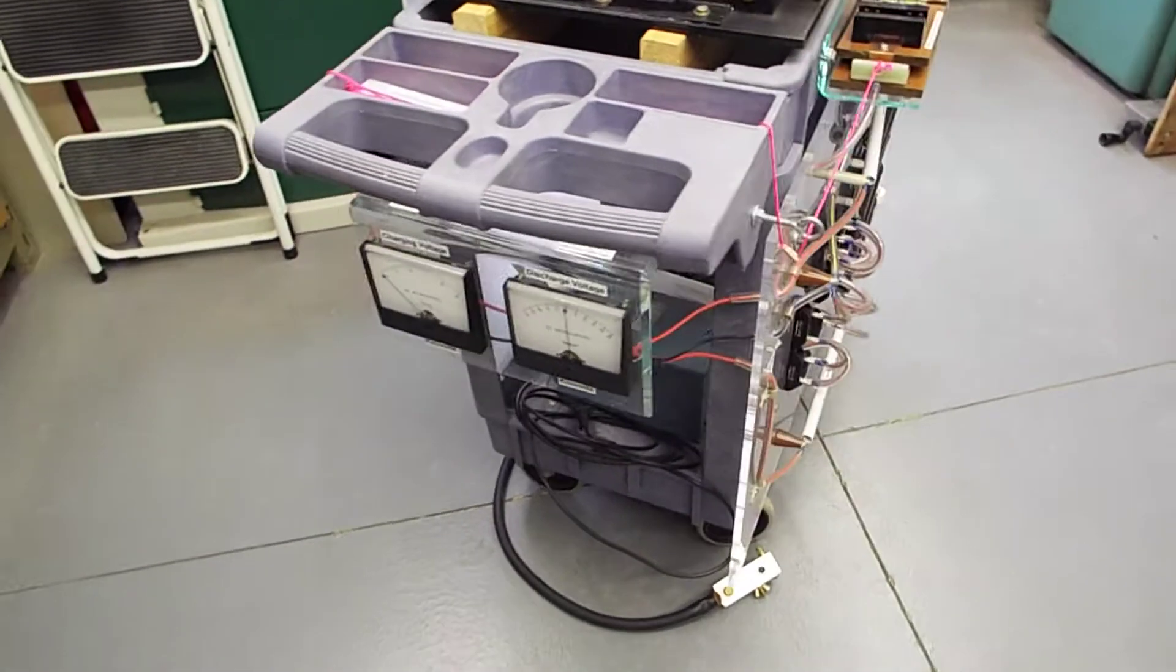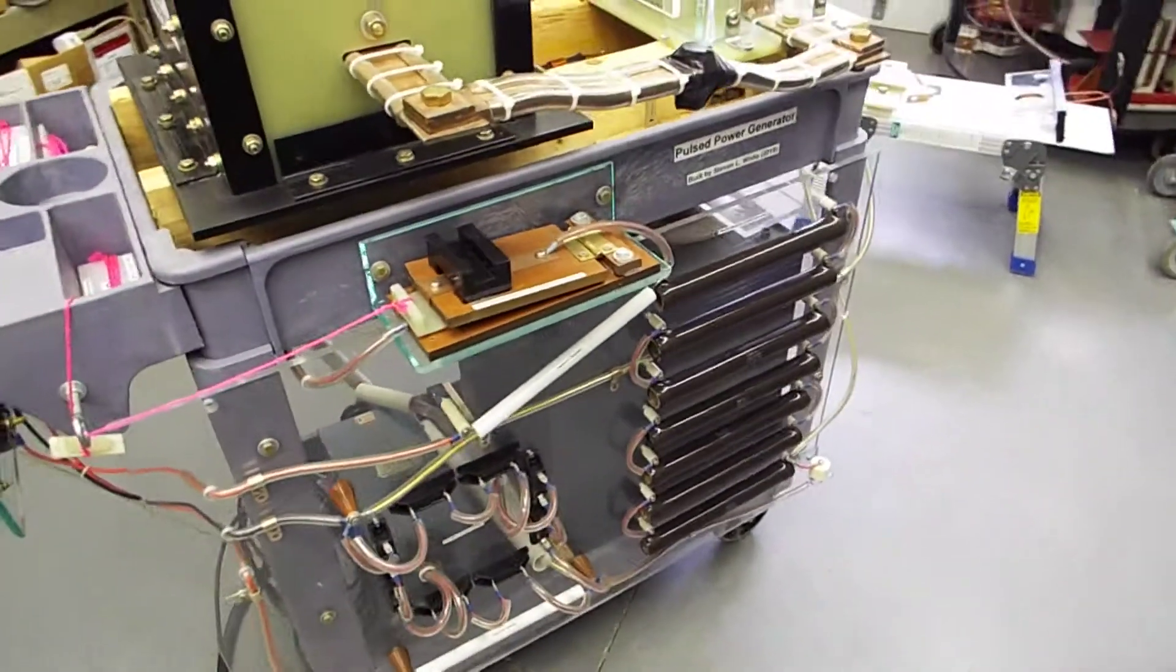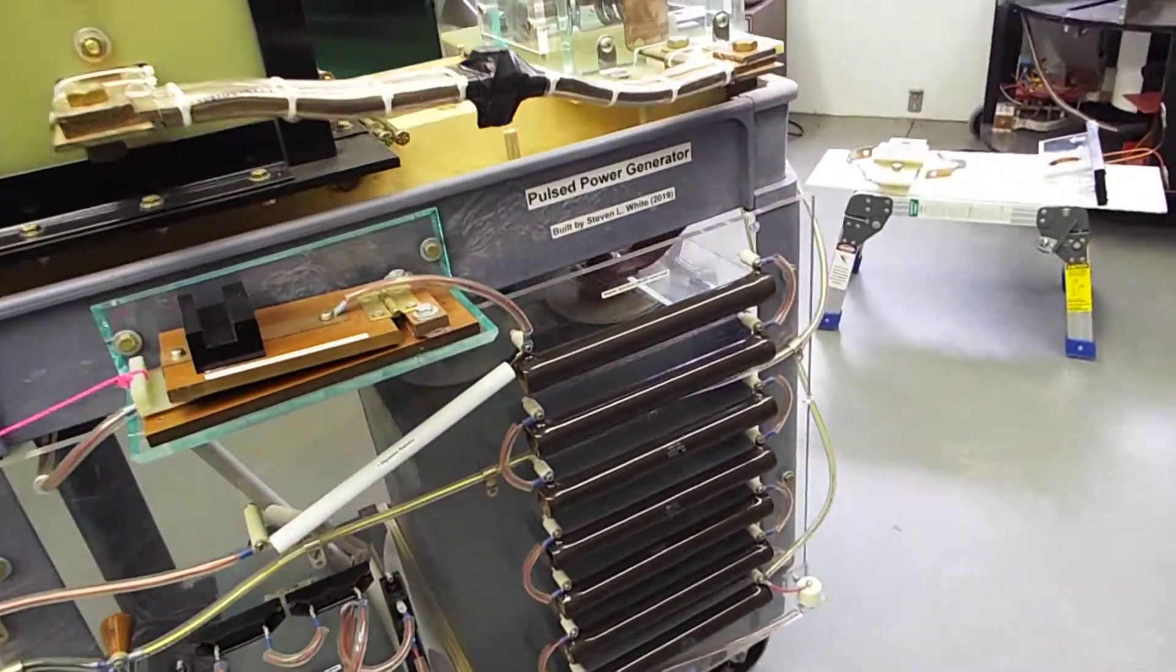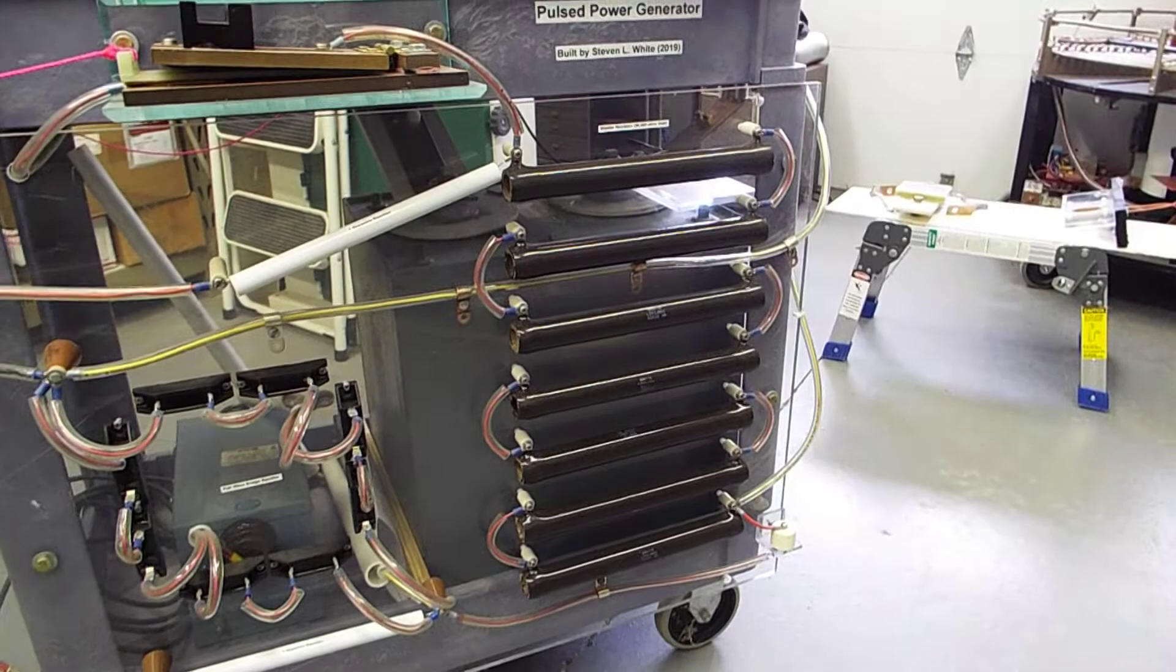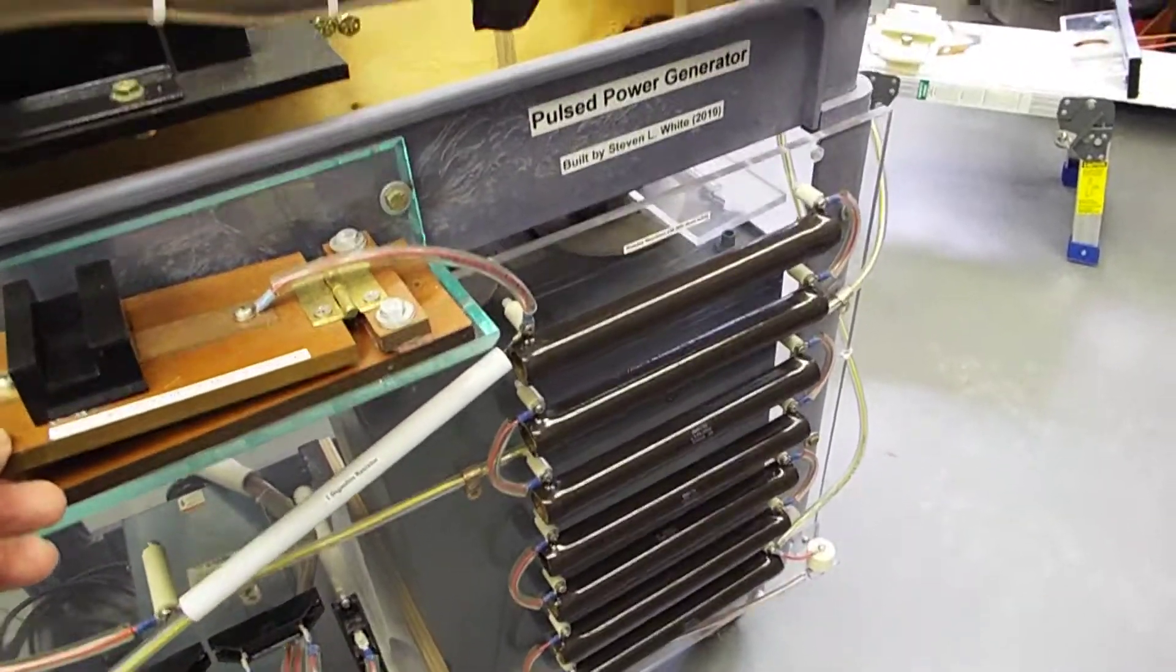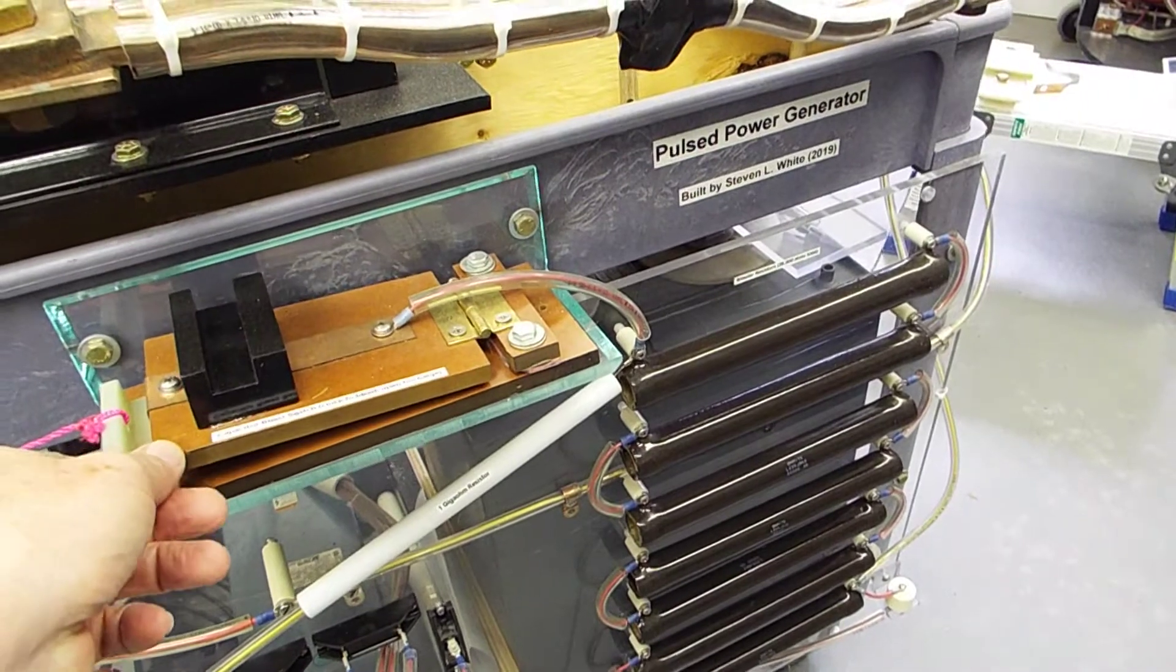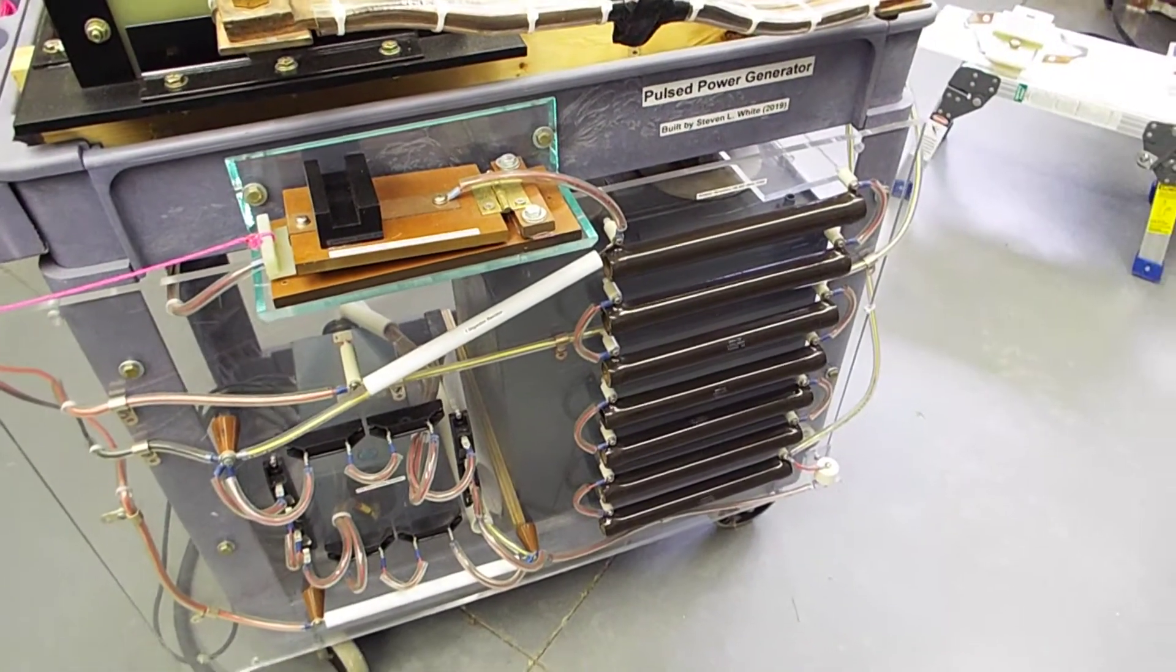And after you're done, to take care of any residual charge, you have this bank of eight power resistors. And this switch here is used to shunt the charge from the capacitor into those power resistors.